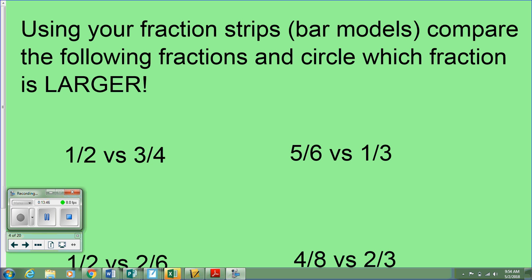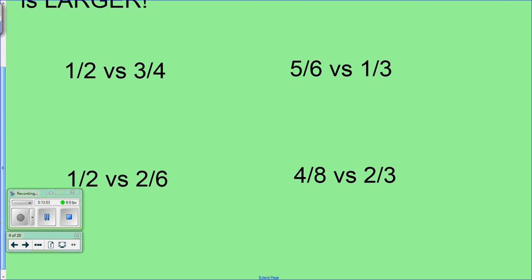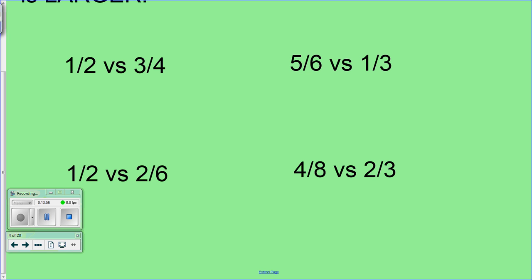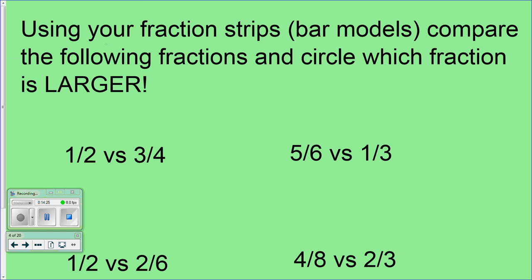To get started, we got 1/2 versus 3/4, 5/6 versus 1/3, 1/2 versus 2/6, and 4/8 versus 2/3. You're using your fraction strips and then you're drawing the bar model for each of those four pairs. You can go in whatever order you want, as long as they all get done.